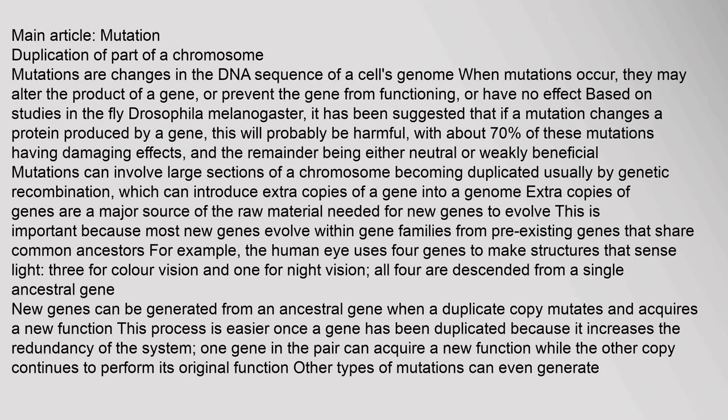Even relatively small differences in genotype can lead to dramatic differences in phenotype. For example, chimpanzees and humans differ in only about 5% of their genomes. Mutation: Mutations are changes in the DNA sequence of a cell's genome. When mutations occur, they may alter the product of a gene, prevent the gene from functioning, or have no effect. Based on studies in the fly Drosophila melanogaster, it has been suggested that if a mutation changes a protein produced by a gene, this will probably be harmful — with about 70% of these mutations having damaging effects — and the remainder being either neutral or weakly beneficial.